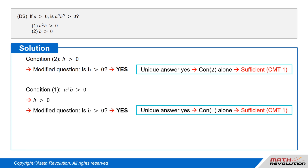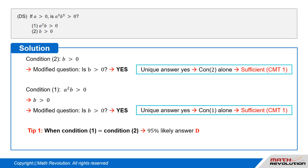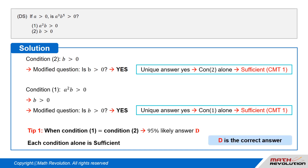Also, according to Tip One, it is about 95 percent likely that D would be the answer when the value of condition one is equal to the value of condition two. Each condition alone is sufficient, thus D is the correct answer.